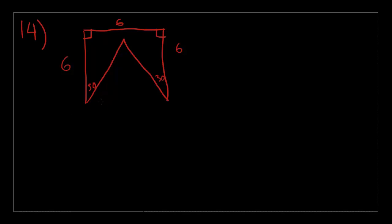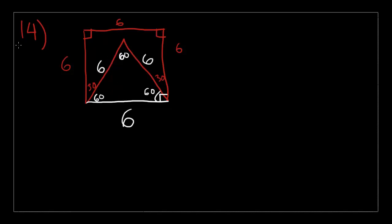One thing you should immediately notice is that if you draw a line right over here — I'm using a different color now — if you draw that line, this will be 60 degrees. They add up to be 90 degrees, which makes the entire figure a square, so the length of this would be 6. If the inner degree measure is 60 degrees, then this is also 60 degrees, and this is also 60 degrees, making the triangle an equilateral triangle. So this length would be 6, and this length would be 6. The perimeter is 6, 12, 18, 24, 30 — that is the perimeter, which is choice D, the correct answer.